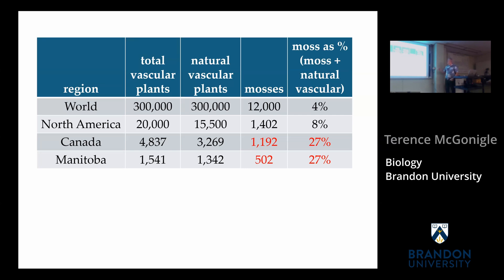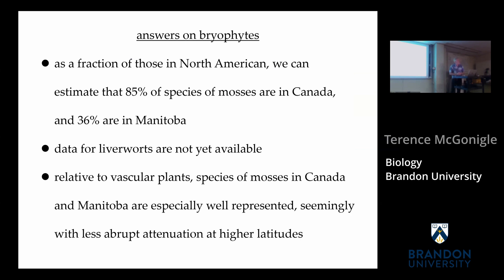In summary: we can estimate that 85% of North American moss species occur in Canada and 36% in Manitoba — these are big numbers. Data for liverworts are not yet available. Relative to vascular plants, mosses in Canada and Manitoba are especially well represented, seemingly with less abrupt attenuation at higher latitudes, thereby demanding that we take more interest in them than we have done hitherto. That is my final slide — thank you for your attention.